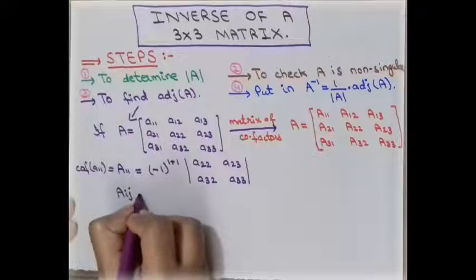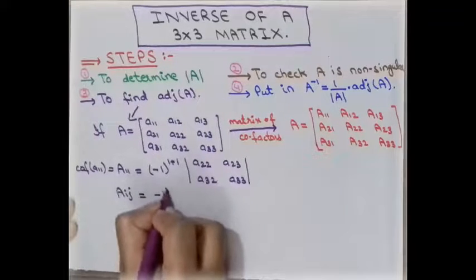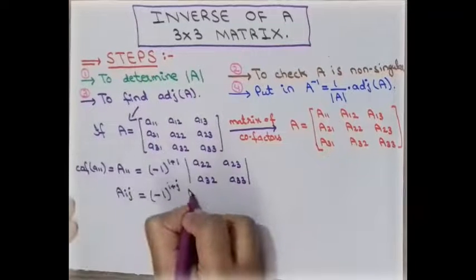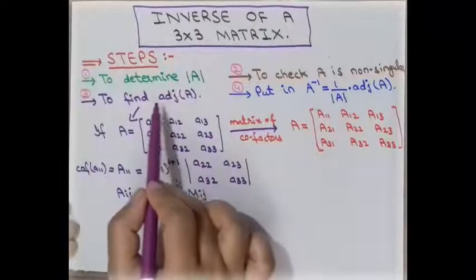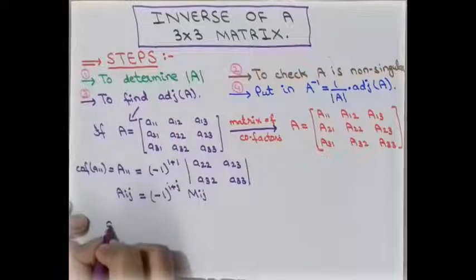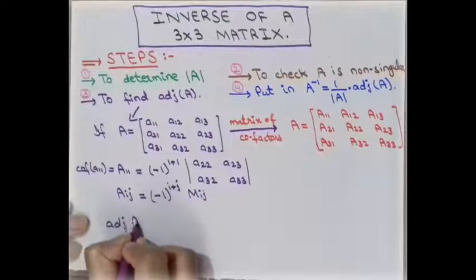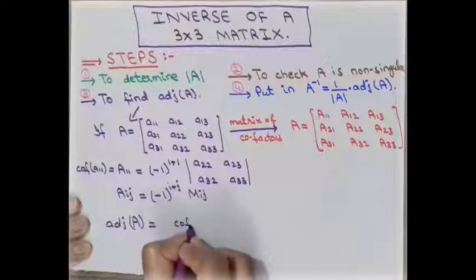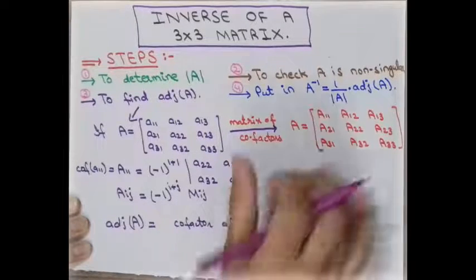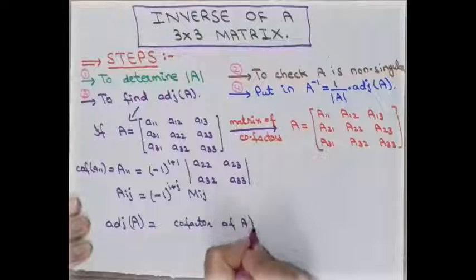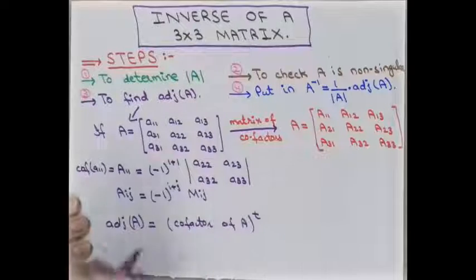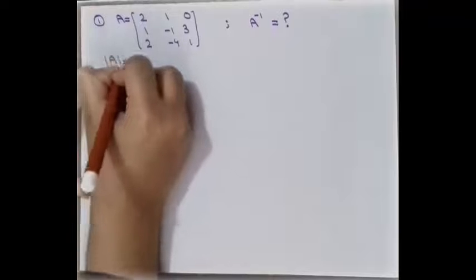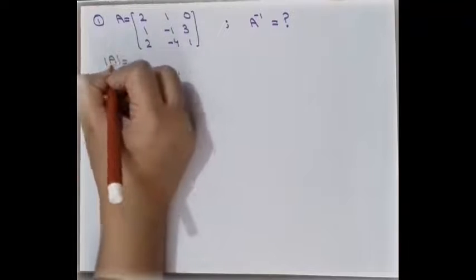In general, to find the co-factor at position (i, j) — that is the i-th row and j-th column — the formula is (-1)^(i+j) multiplied by M_ij, the corresponding minor. To calculate the adjoint of A, the adjoint equals the transpose of the co-factor matrix.